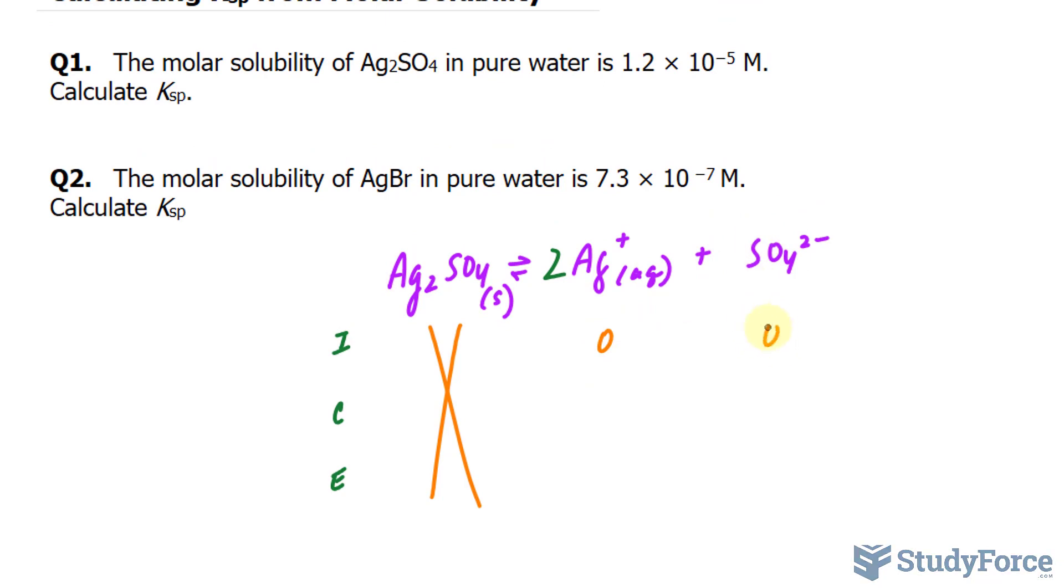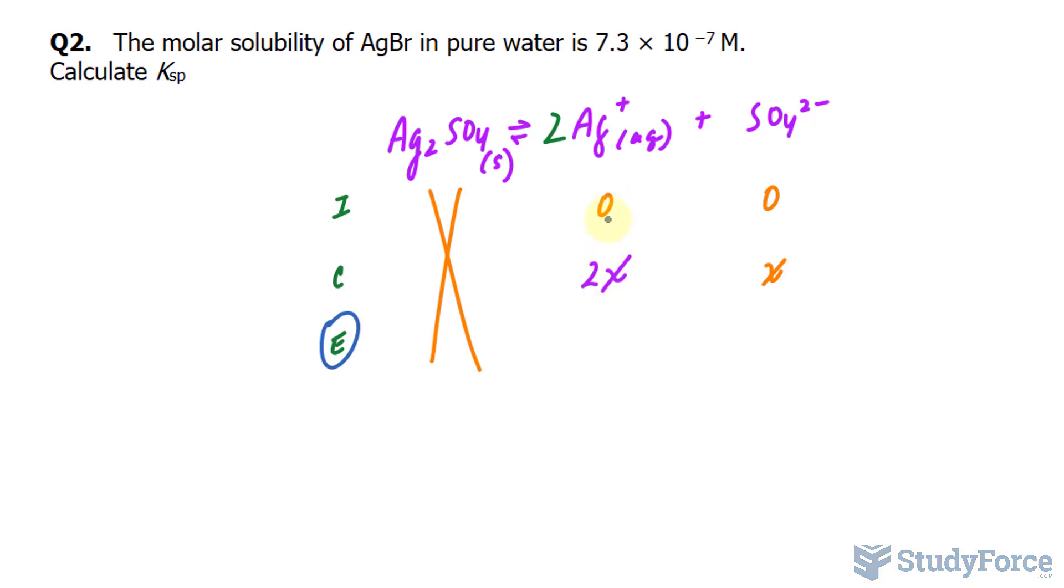We'll represent the change of SO4 2- as X, and by all means you could have set this as X and stoichiometrically found the equivalent for the other. Now if I'm setting this as X and it's a 1 to 2 ratio, then this should be 2X. To find E, the equilibrium expression, you add I and C, and that's always the case. So I'll add 0 plus 2X, that's 2X. 0 plus X is X.